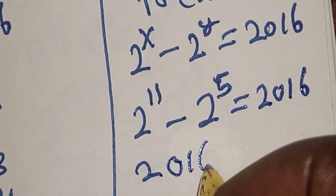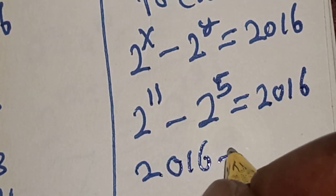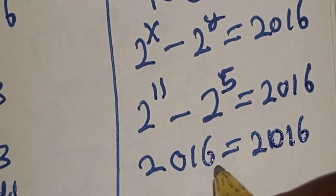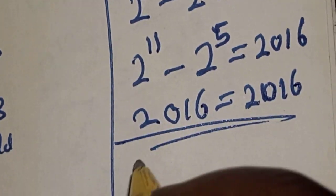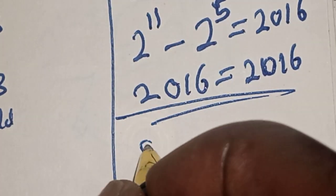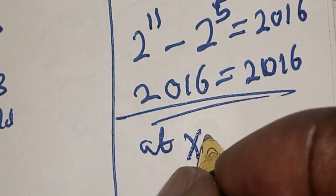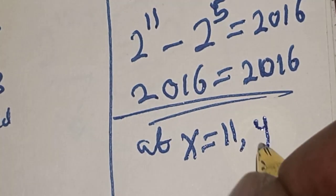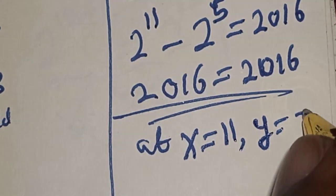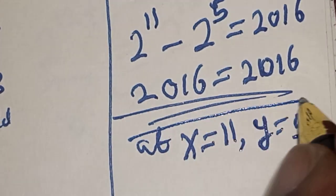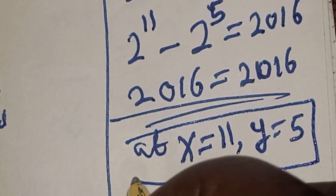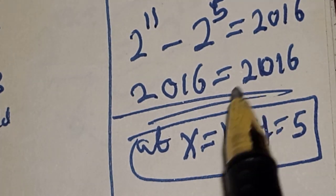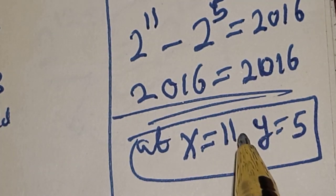Therefore, 2016 on the left-hand side equals 2016 on the right-hand side, which satisfies the given equation. Our final answer is X equals 11, Y equals 5. Before you leave, like, share, comment, and subscribe. Thank you.